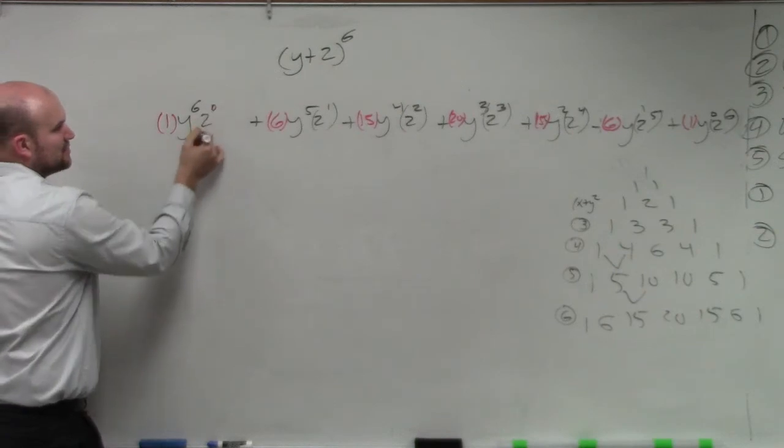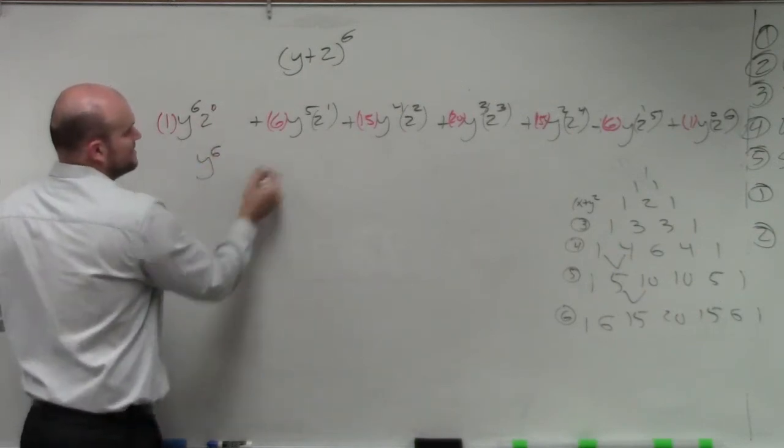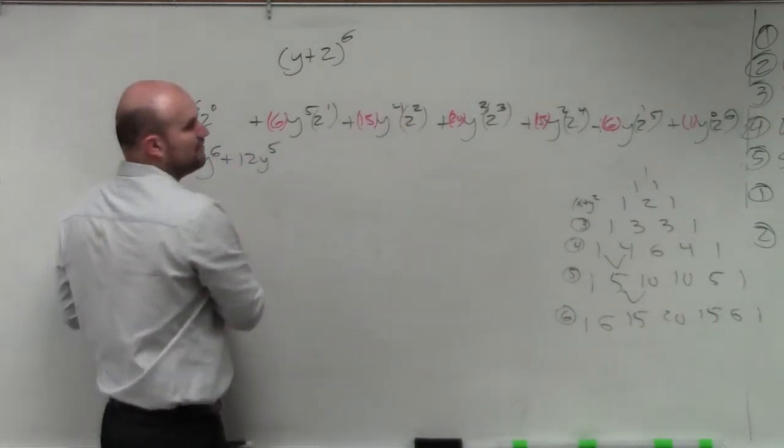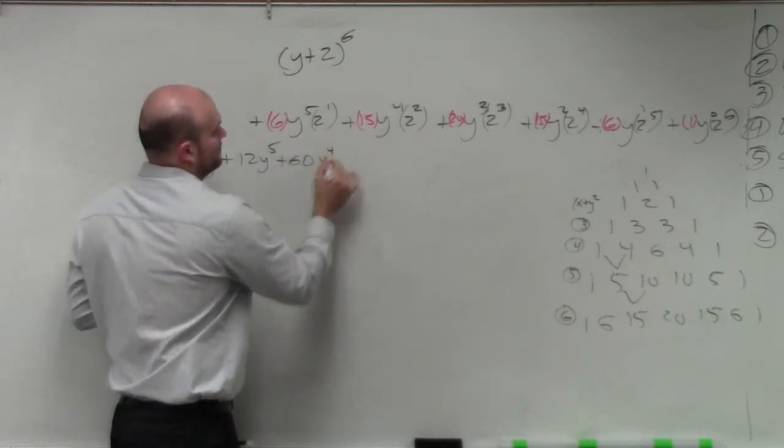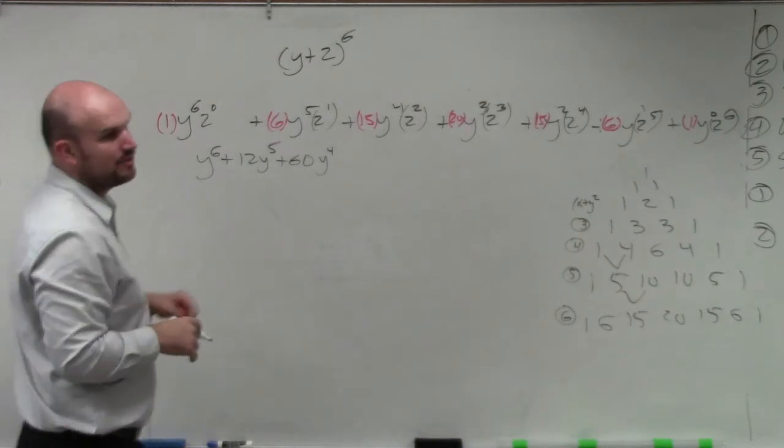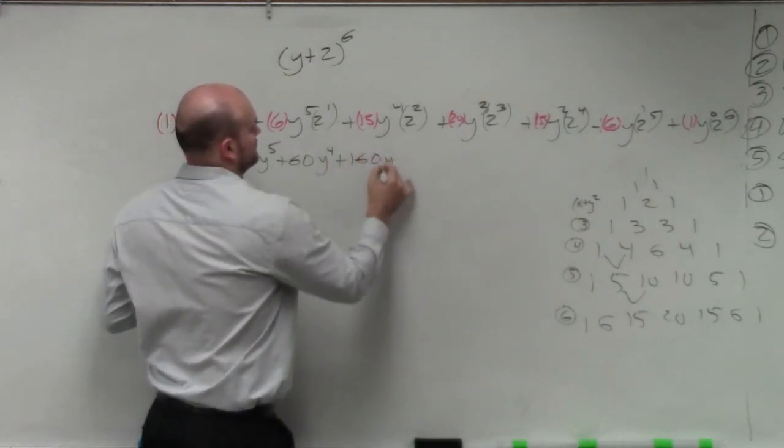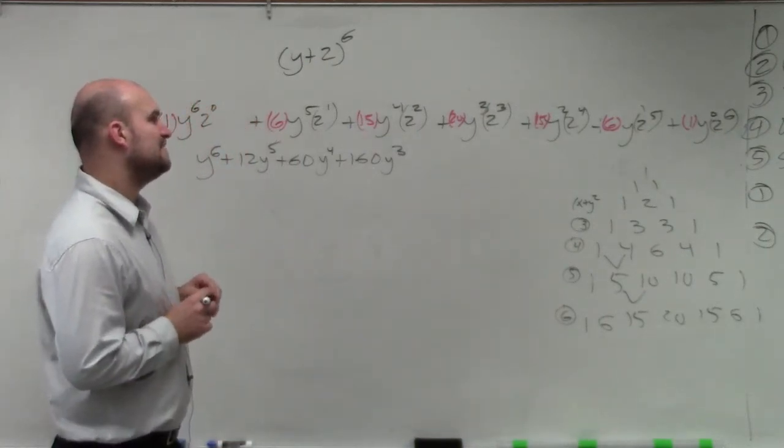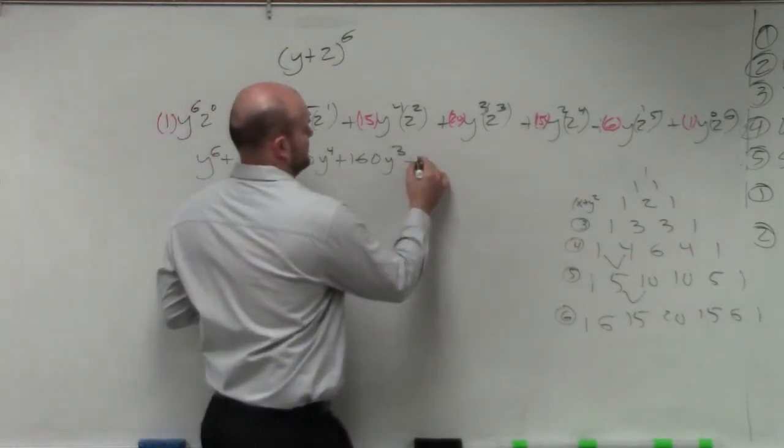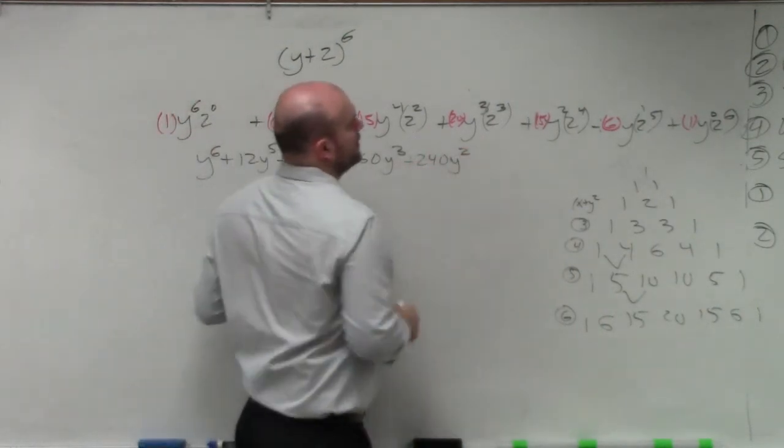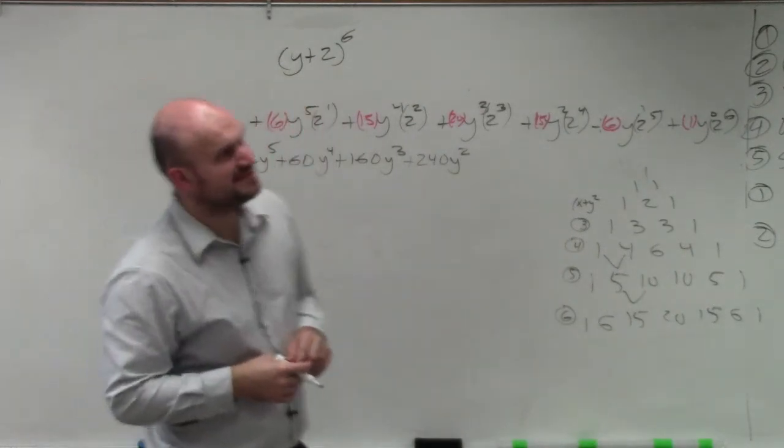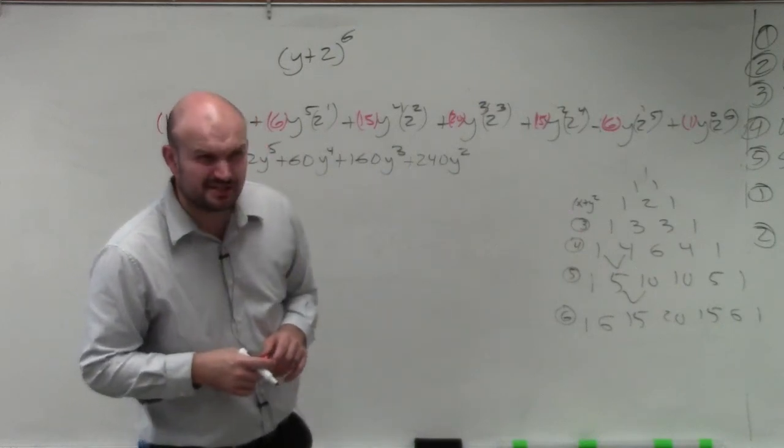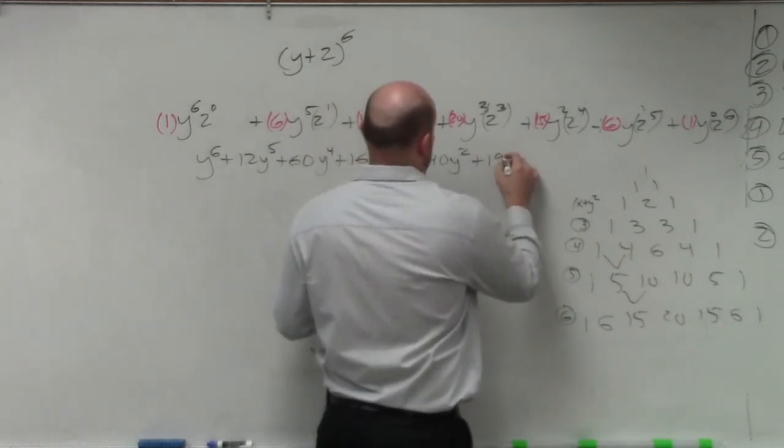So therefore, this y to the 0 is just 1. So my final answer is y to the 6th. 2 to the 1st power is 2. 2 times 6 is 12, y to the 5th. That's 4. 4 times 15 is 60, y to the 4th. 2 cubed is 8. 8 times 20 is 160. 2 to the 4th is going to be 16. 16 times 15 is 240.